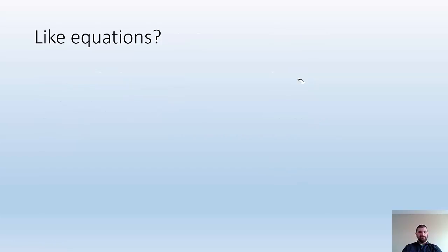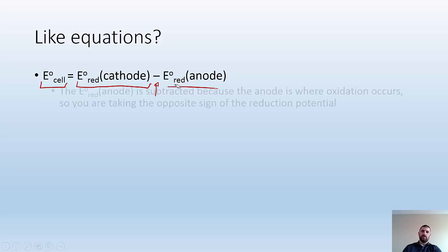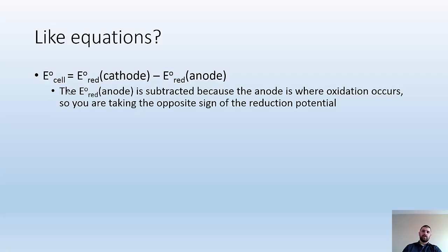Here's an equation for calculating cell potential. The standard cell potential equals the reduction potential of the cathode minus the reduction potential of the anode. Why subtract the anode's potential? Because at the anode, oxidation occurs, and oxidation is the opposite of reduction. So if you're looking up the reduction potential but want the oxidation potential, you negate it — that's where the minus sign comes in.